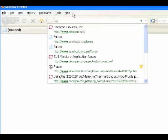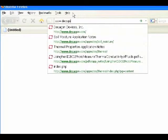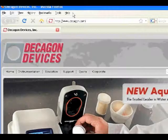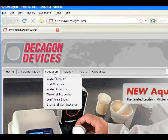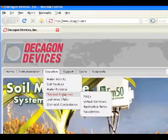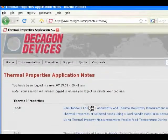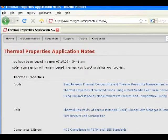For more detailed information, go to our website at www.decagon.com. In the Education section, choose the Thermal Properties Application Notes. At the bottom of the page is the one about fluid measurements.